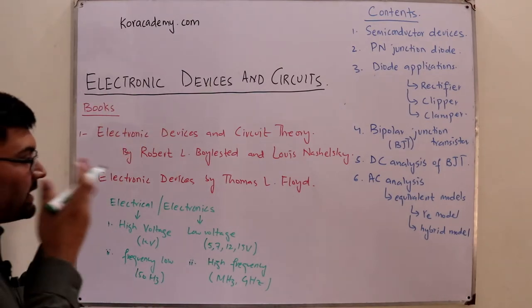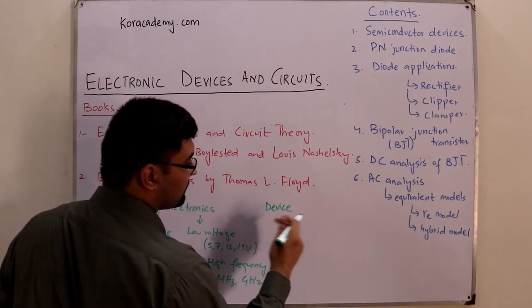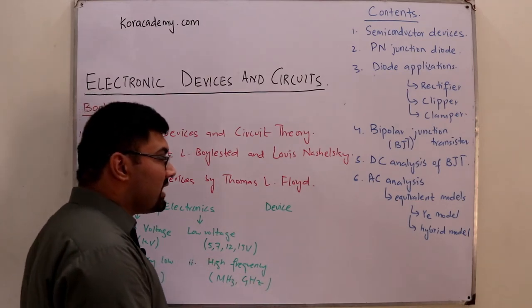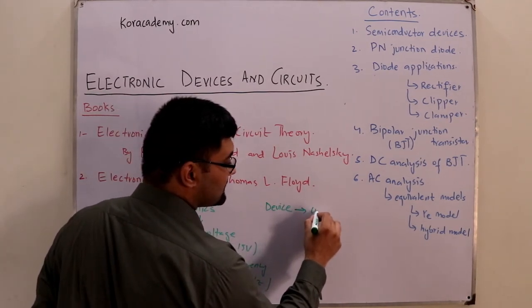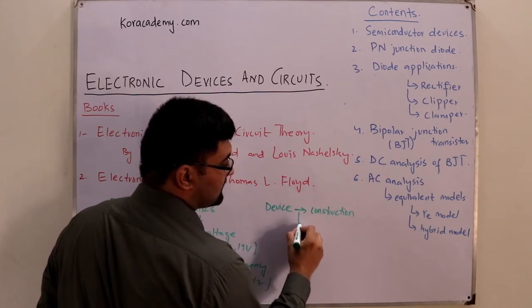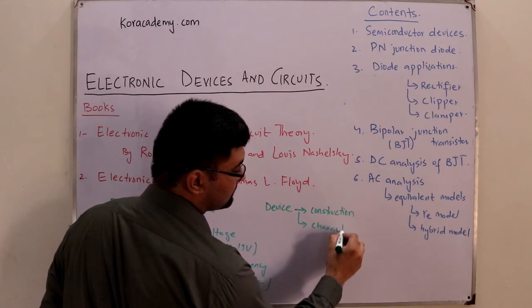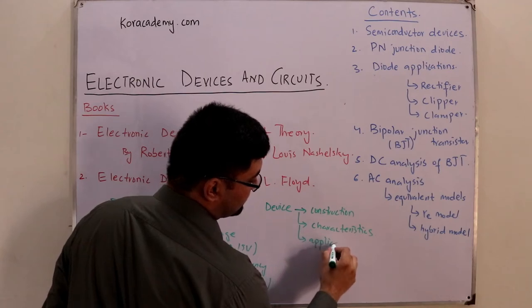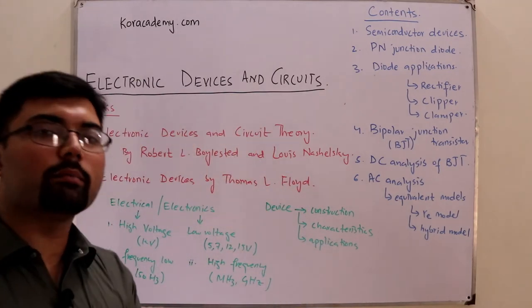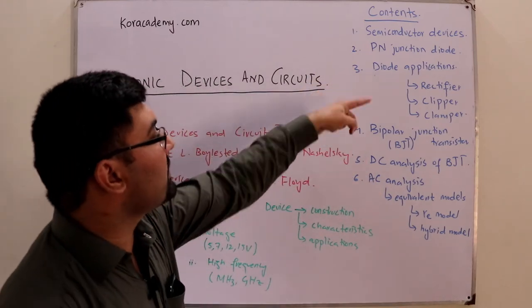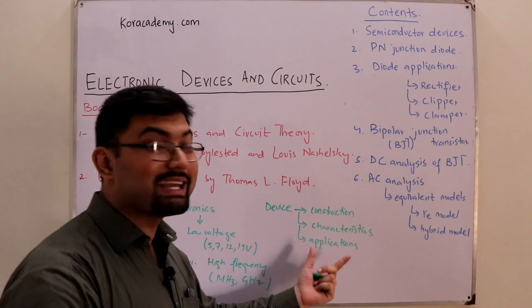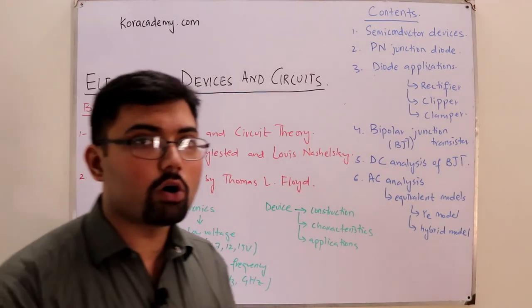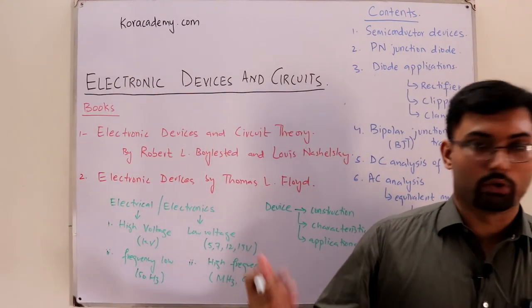What do we mean by device? A device is any material that works for us, that gives us some output. To study a device we need to know three things: first is its construction, second is its characteristics, and third is its applications. If you know these three things about anything, you know the thing completely. Let's say we have a diode. First we study the construction of the diode, then we study different characteristics or properties, and then we see the applications where it is used.